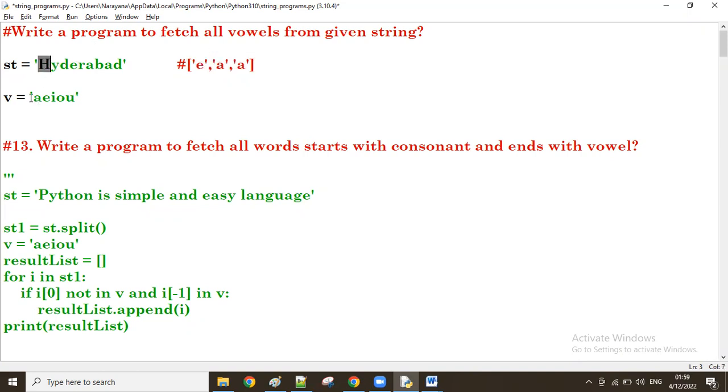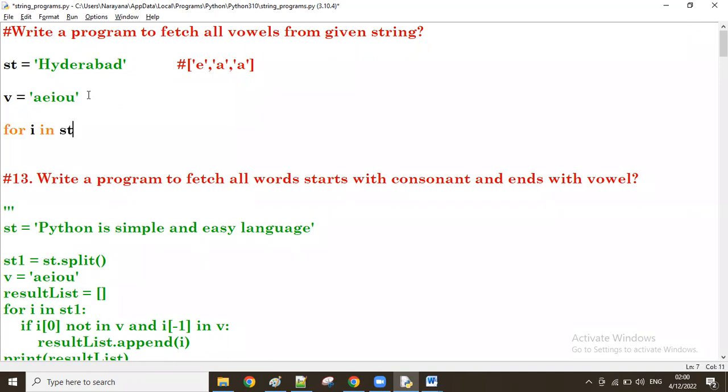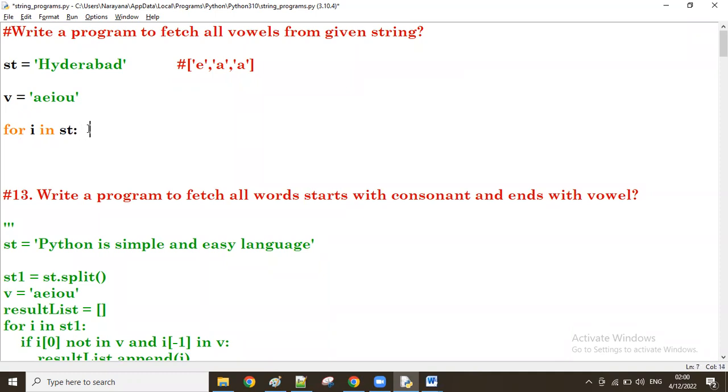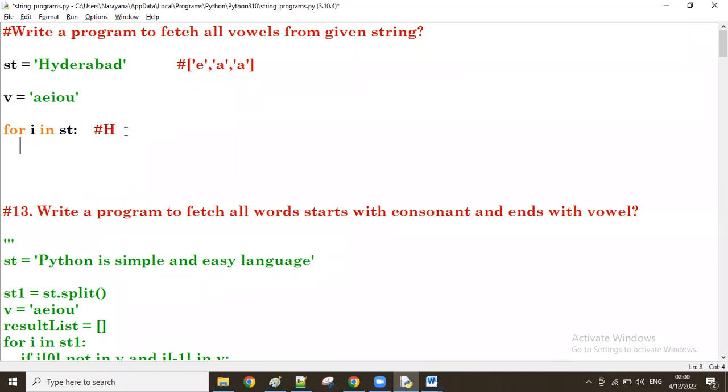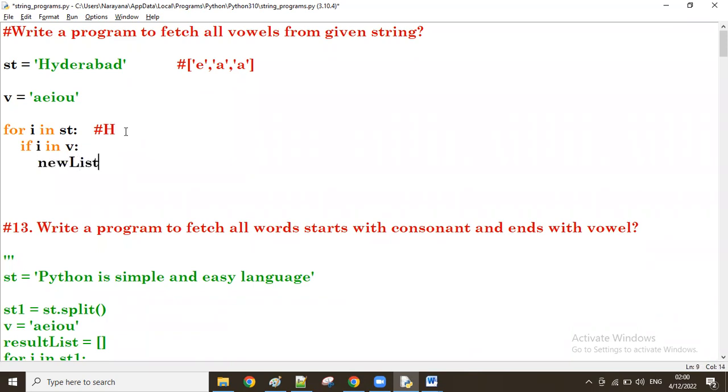Suppose H is there. H is not there in vowels, so it's not a vowel. Next, Y is not available, also not a vowel. Next, D is not available, not a vowel. E is available, so it's a vowel. We're taking the result list. We'll use for i in st to fetch one by one from the given string. We take one new list which is empty and append to the new list.